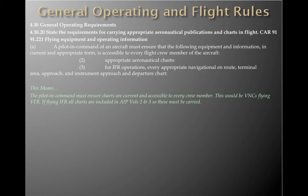Section 91.221 covers flying equipment and operating information. A pilot in command must ensure that appropriate aeronautical charts in current and appropriate form are accessible to every flight crew member. For VFR this means VNC charts; for IFR operations, every appropriate navigational en route, terminal area, approach, instrument approach and departure chart must be available — including IFR publications Volumes 2 and 3.